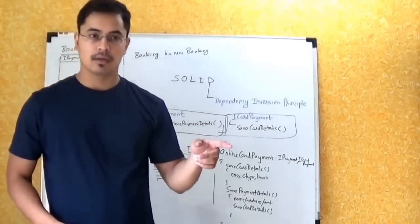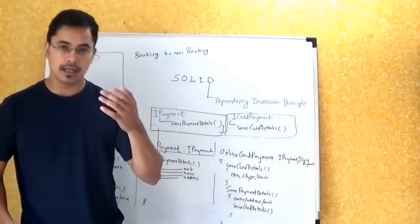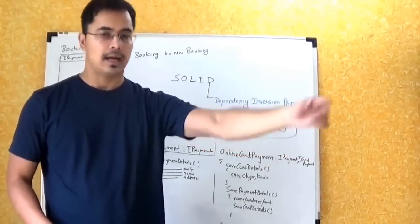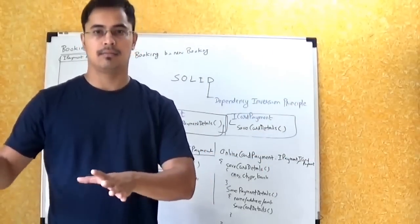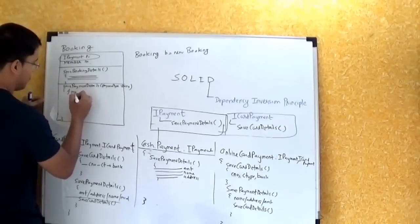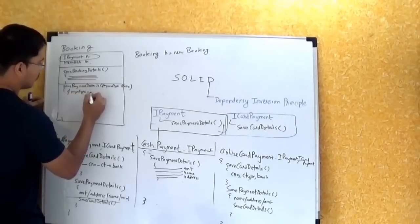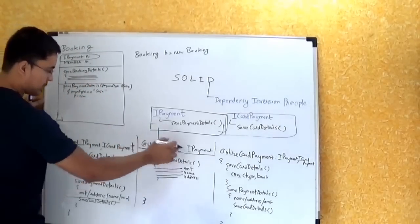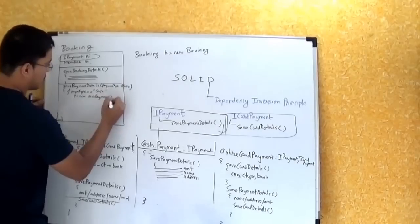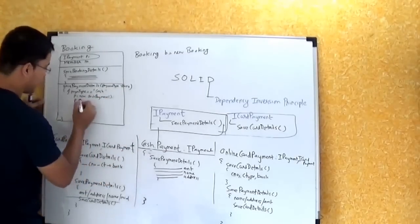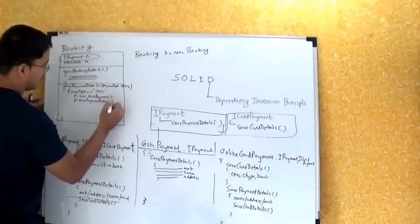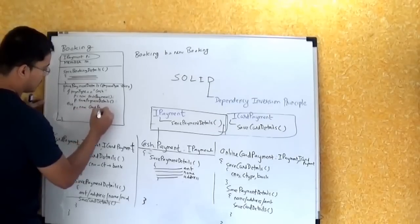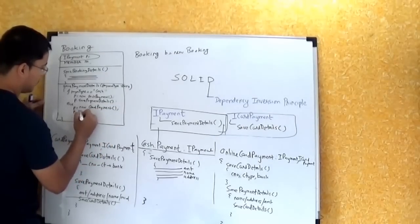One of my supervisors used to say the best way of management is to outsource responsibility to your team members — let team members set their own deadlines. Similarly, if payment type equals cash, say p equals new CashPayment and call p.savePaymentDetails; or else say p equals new CardPayment and call p.savePaymentDetails.